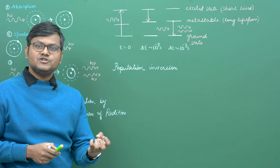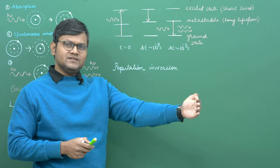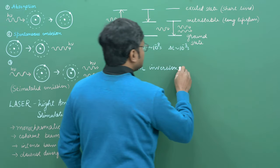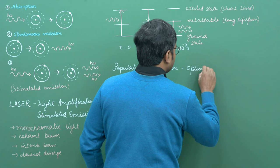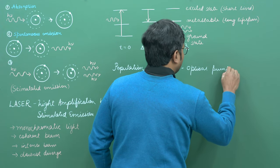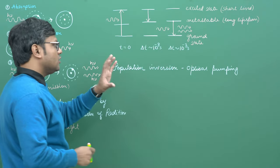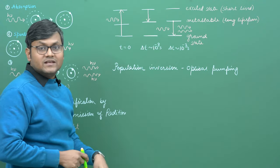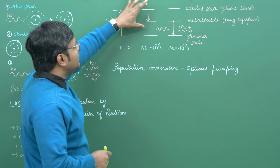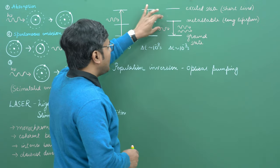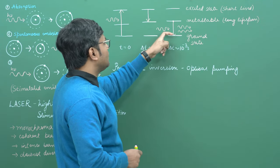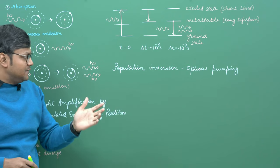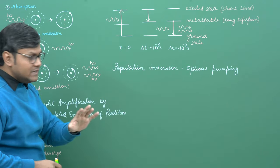In the process of population inversion, we are interested in having a large number of atoms in the state above the ground state, so we get more stimulated emission, thereby causing the lasing transitions. There are different methods of population inversion; one of them is called optical pumping. In optical pumping, we introduce a suitable radiation into the material causing transitions from the ground state to the short-lived excited state, followed by an immediate non-radiative transition to the metastable state where a large number of atoms accumulate. Then, if we introduce a photon of sufficient frequency, stimulated emission happens, which constitutes the laser light.